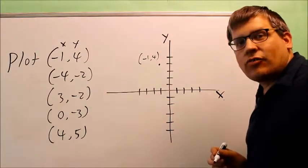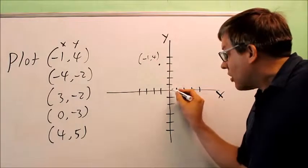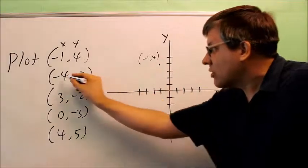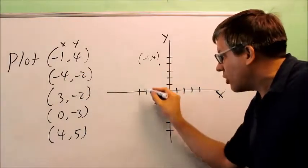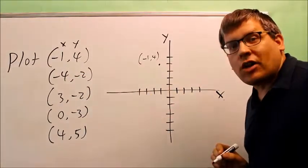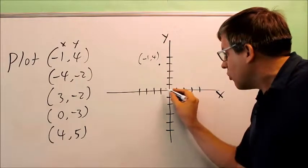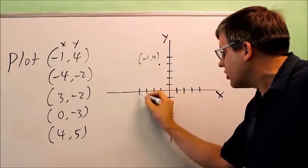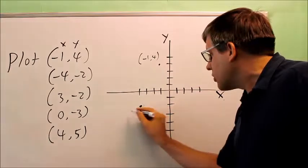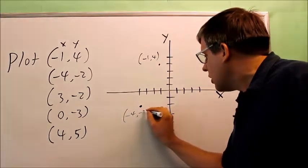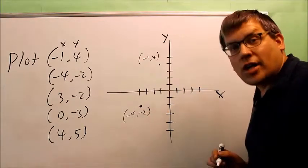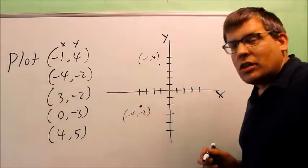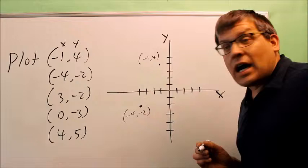The next coordinate is negative four, negative two. I have to go to the left because the X value is negative, and I'm also going to go down because the Y value is also negative. So I go one, two, three, four places to the left and down two units — right here is negative four, negative two.